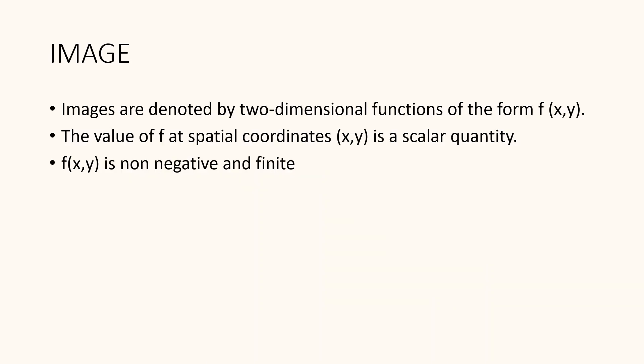In this session, let us look into the process of image sampling and quantization. Images are denoted by a two-dimensional function of the form f. The value of f at a spatial coordinate is a scalar quantity whose physical meaning is determined by the source of the image and whose values are proportional to energy radiated by a physical source. Hence, f will be non-negative and finite.